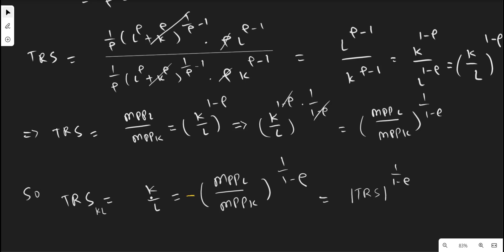The ultimate form of the technical rate of substitution of capital for labor equals the technical rate of substitution to the power 1 over (1 minus rho). We will use this technical rate of substitution in the computation of the elasticity of substitution for CES technology. This concludes the discussion of technical rate of substitution for the CES production function.